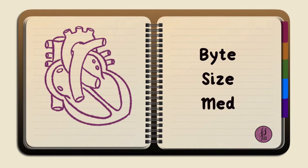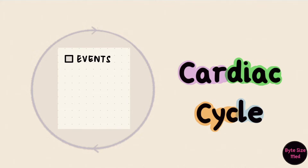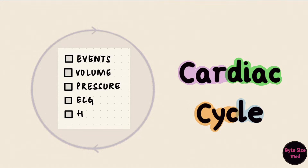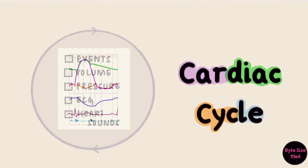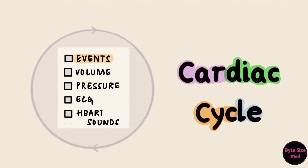Hello, welcome to Bite Size Med. This video is on the cardiac cycle, and we're going to be looking at the events that take place, the volume and pressure changes that happen, along with the electrocardiogram and the heart sounds. The diagram that successfully summarizes all of that into one neat little picture is called Wigger's Diagram, and you would have seen it in almost every textbook. If you're trying to understand what that picture is about, hopefully I can help you out. I have broken down each part into separate videos and I'll leave links in the description box. This is really just putting all of it together and looking at it from a different angle.